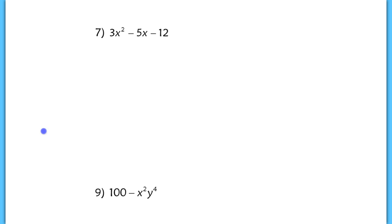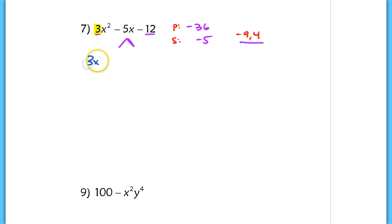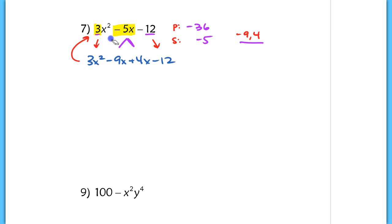In number 7, there is no GCF. Because the leading coefficient is not 1, we have to split the middle term and factor differently. Multiply the first and last coefficients: 3 times negative 12 gives negative 36, and we need the middle term to be negative 5. Find two numbers whose product is negative 36 and whose sum is negative 5: those are negative 9 and 4. Split the middle term into negative 9x and 4x, giving us 3x squared minus 9x plus 4x minus 12. We're just rewriting the negative 5x — we haven't changed the problem at all. Now we can factor by grouping.